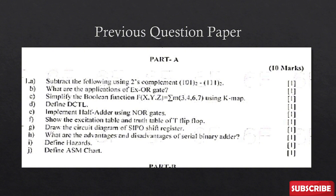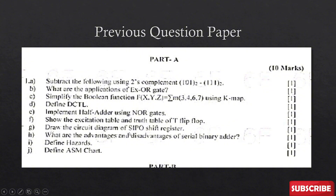Coming to the previous question paper. From Unit 1, they asked: subtract the following using 2's complement — 101 and 1111 in 2's complement; what are the applications of XOR gate (two applications are enough); simplify a Boolean function using K-map; define DCTL; implement half adder using NOR gates; excitation table and truth table of T flip-flop (half mark each); draw the circuit of SIPO shift register; advantages and disadvantages of serial binary adder; define hazards; and define ASM chart. Short questions are really important — try to answer maximum and start your answer paper with Part A.